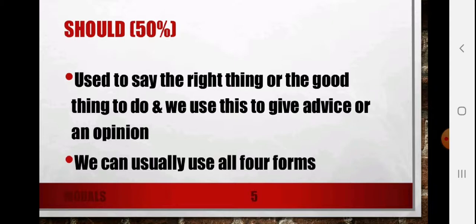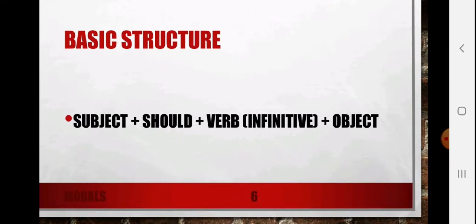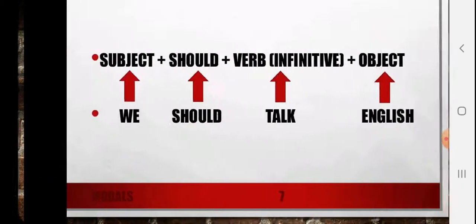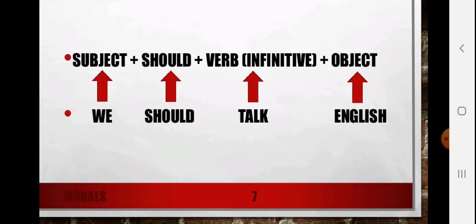We can usually use all four forms. The basic structure is: subject + should + verb (infinitive) + object. For example, the statement is 'We should talk English' or 'We should talk Hindi.' Here 'we' represents the subject, 'should' is the modal, the verb used is 'talk,' and the object is 'English.'